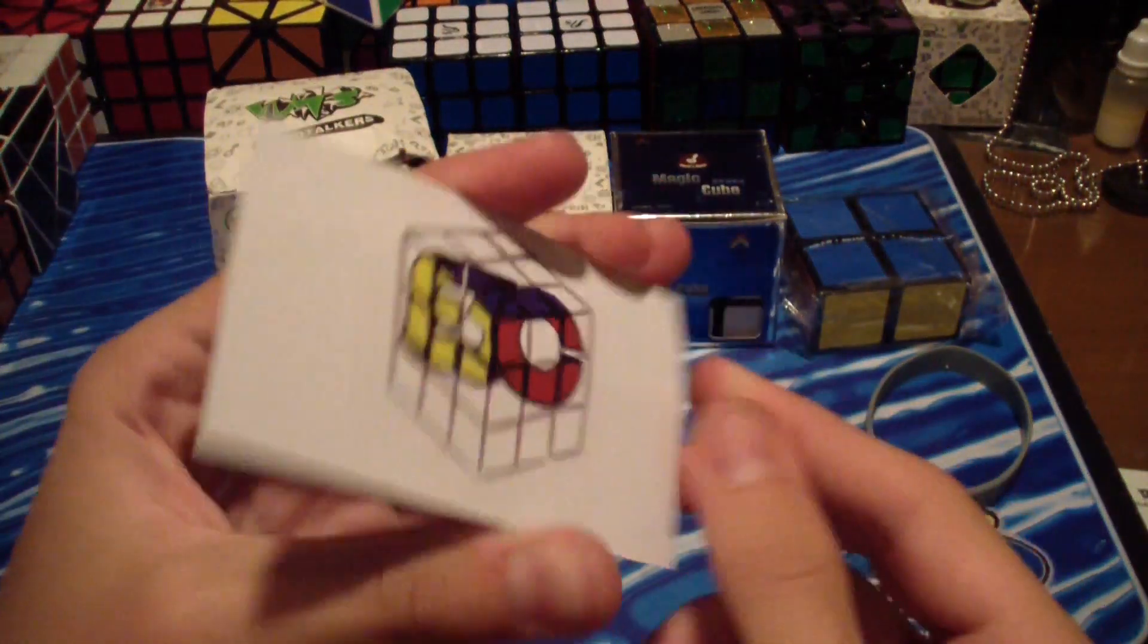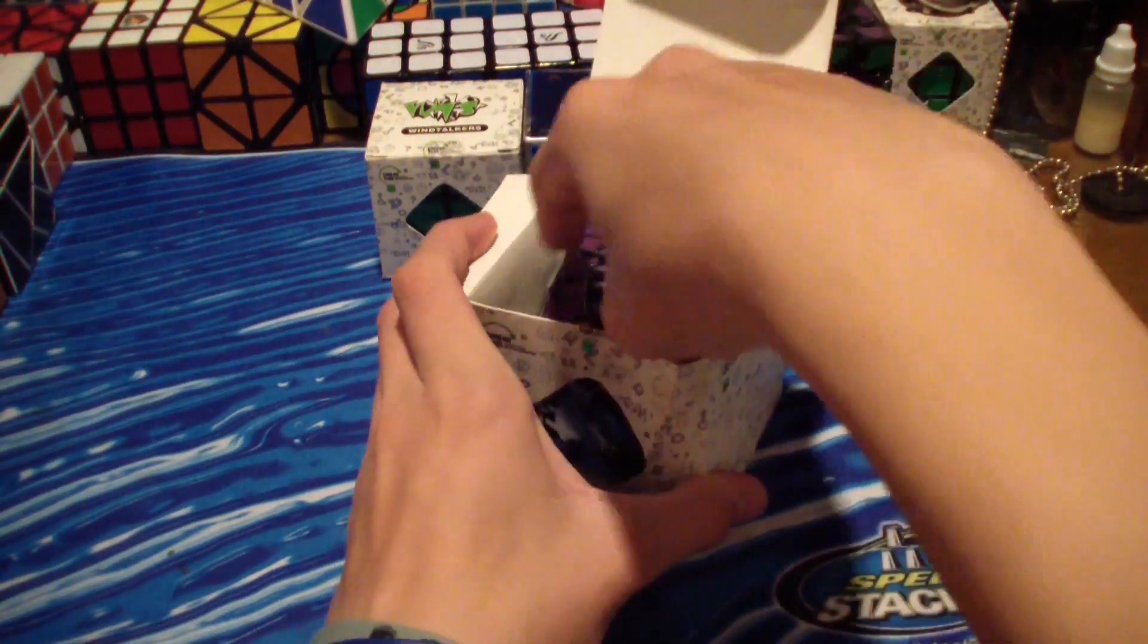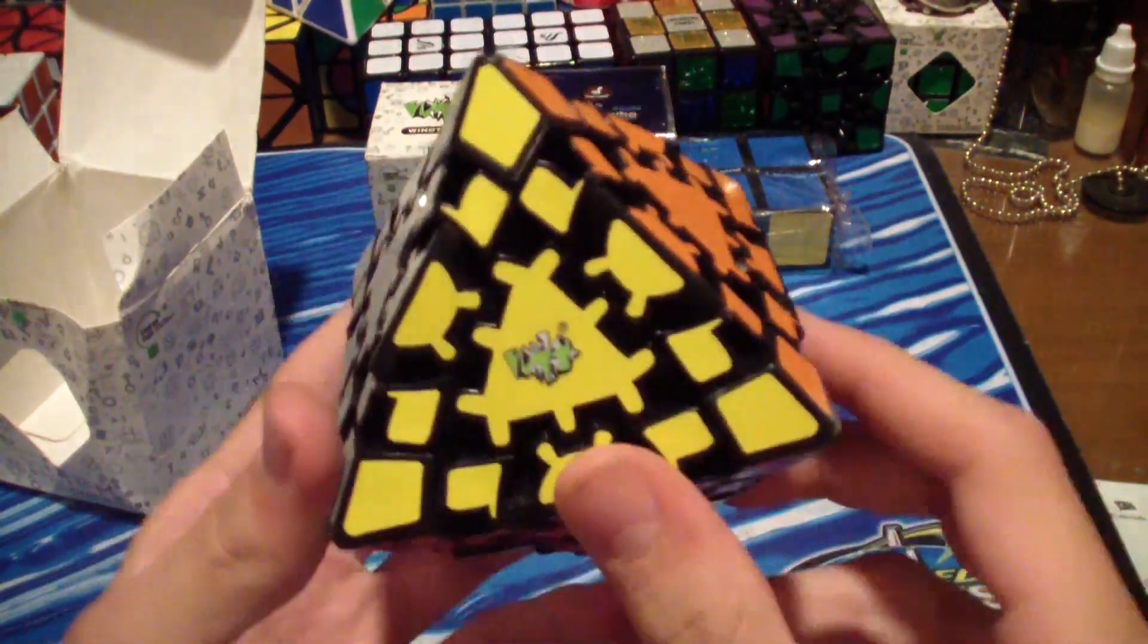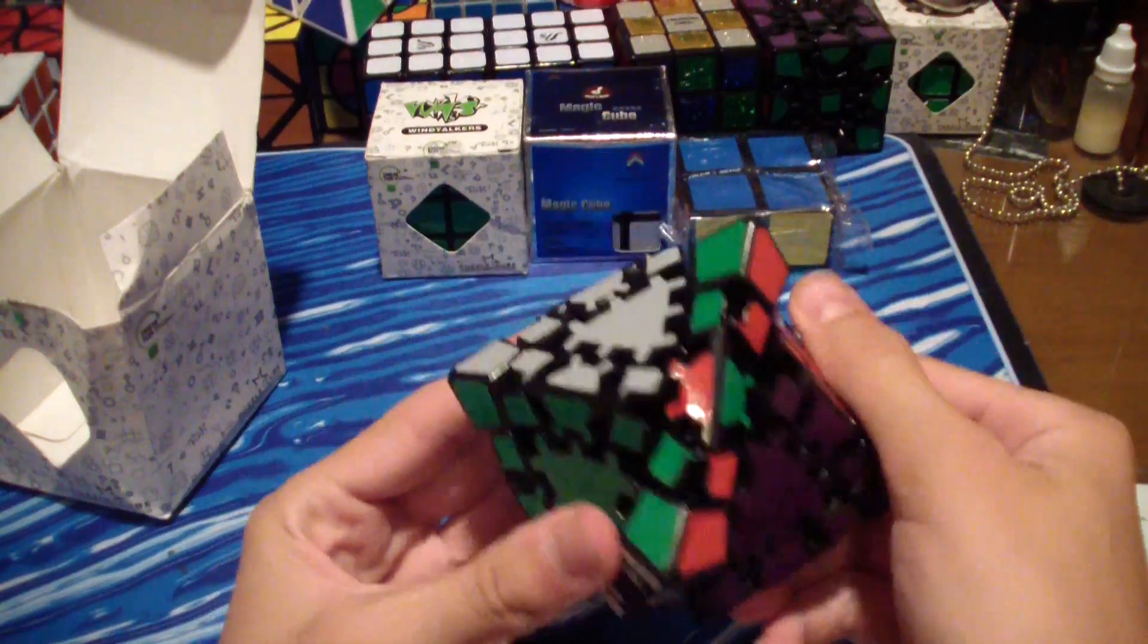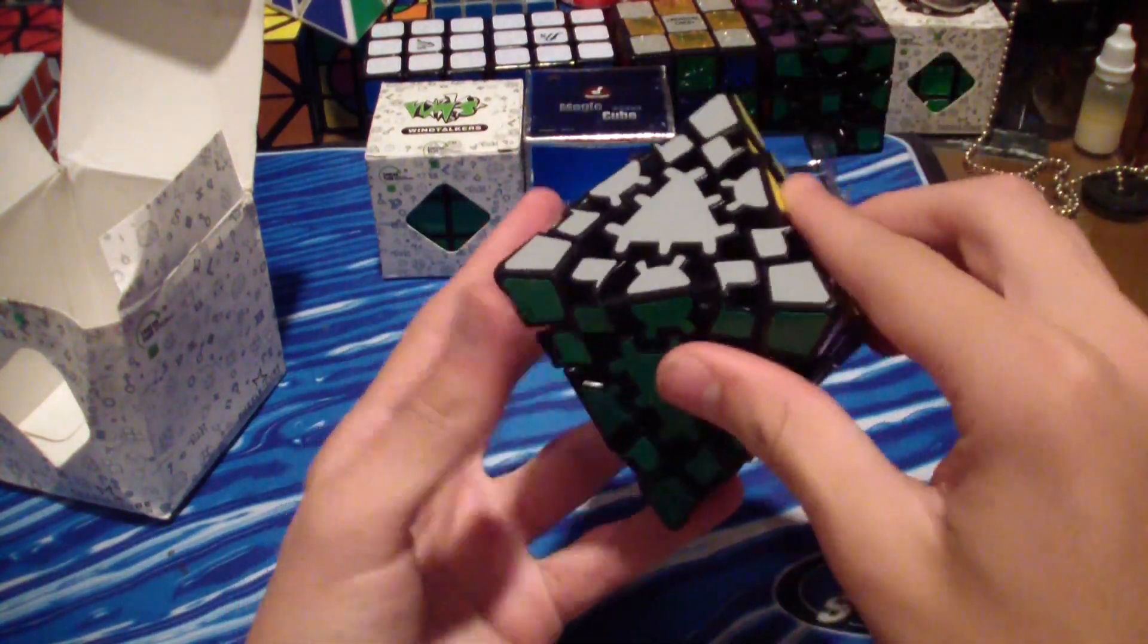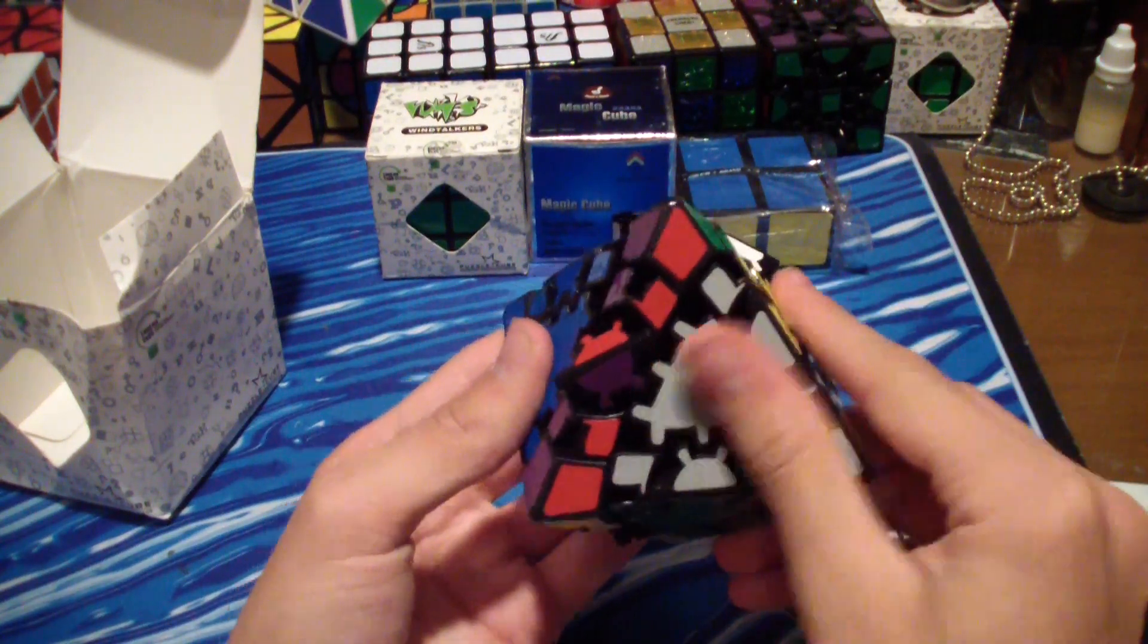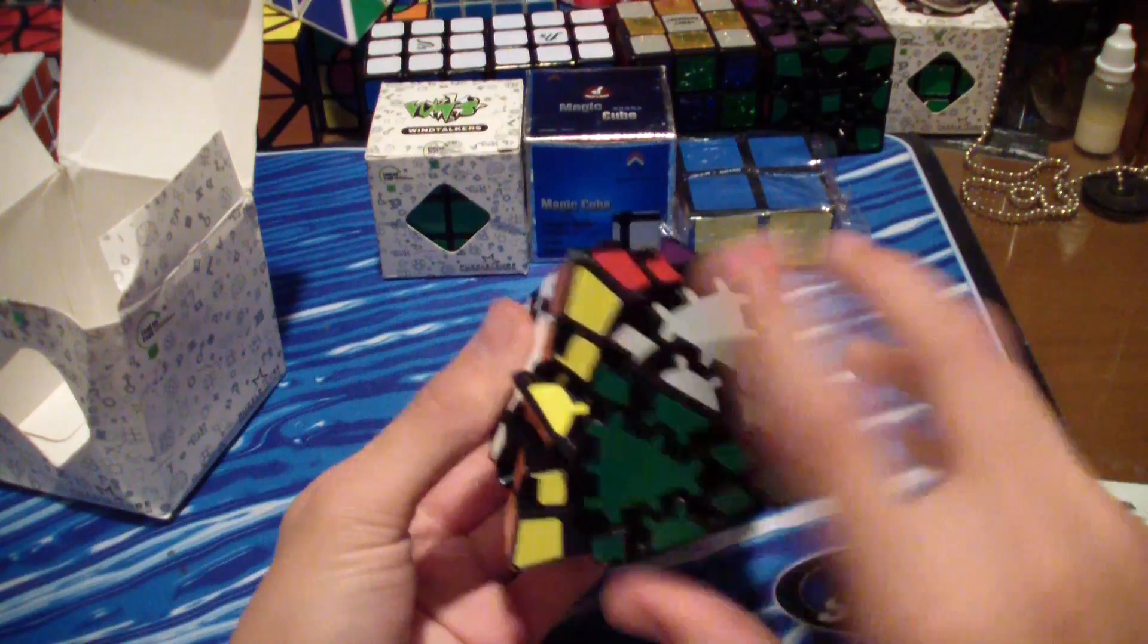First let's take a look at the Lan Lan Gear Dodecahedron. Here is the puzzle. It's based off of the Gear Cube, otherwise known as the Caution Cube. How it turns is like this. You can see how the cross would be right here and these are corners, but it has a different type of parity on this.